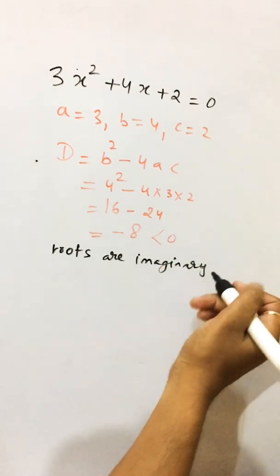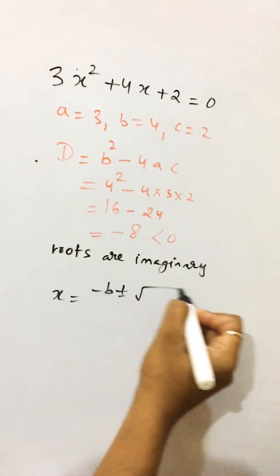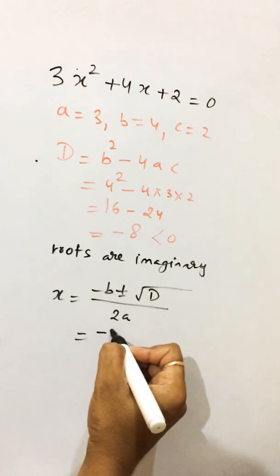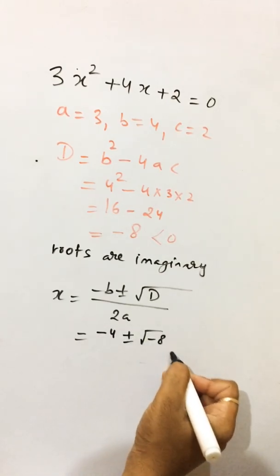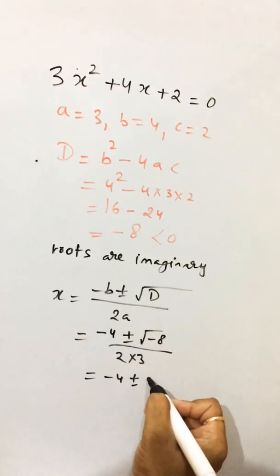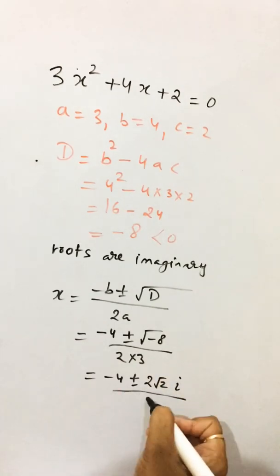So how can you find the roots? By using the formula minus b plus minus under root d upon 2a. Here place the value: minus 4 plus minus root d minus 8 upon 2a is 3. Here minus 4 plus minus 2 root 2, and the value of root minus 1 is iota upon 6.